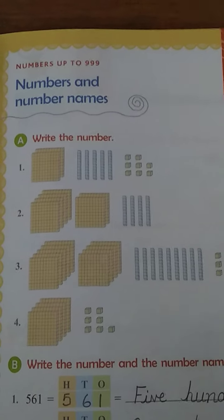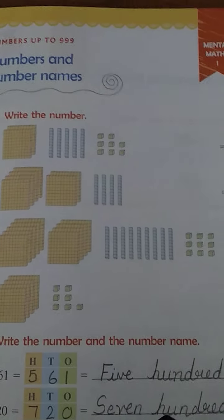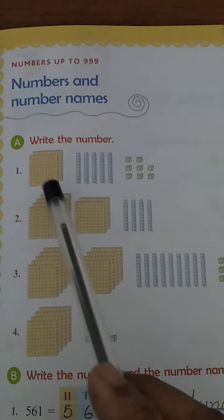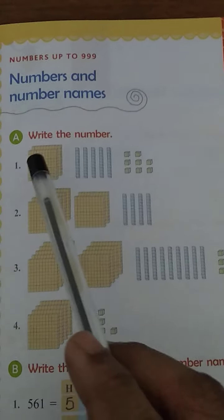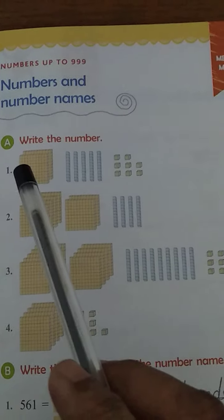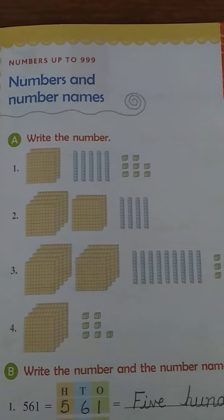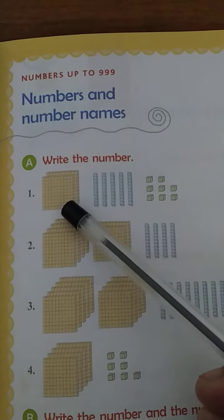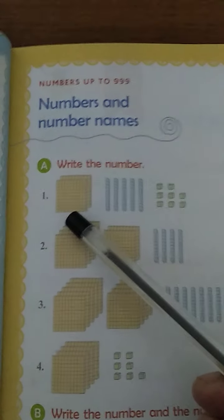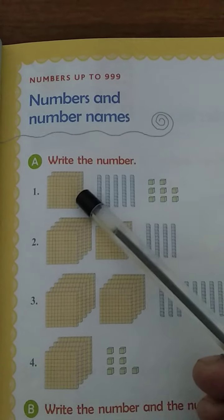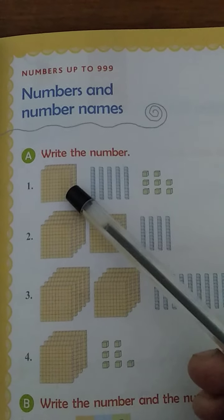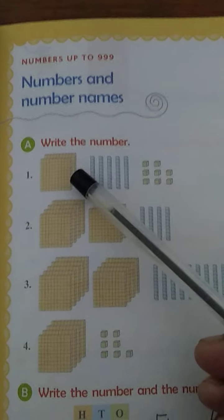I will be taking one question from each part and the remaining you have to do as practice. Let's take the first question of Part A. As you can see, there are blocks. We have to count the blocks and tell the total number. This yellow block consists of 100 small boxes. Here there are 2 such blocks, so that means a total of 200 blocks.